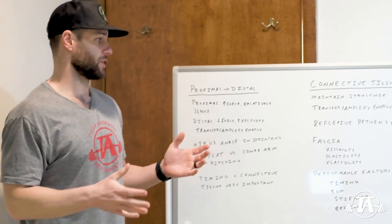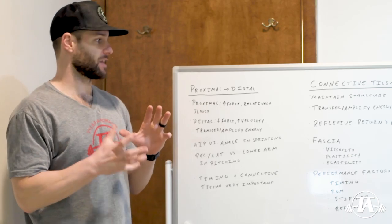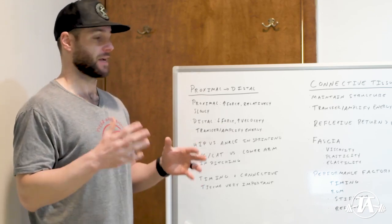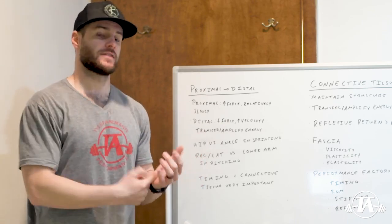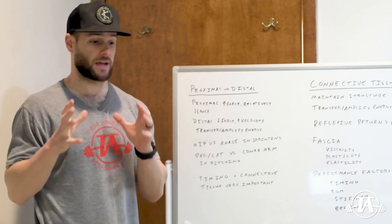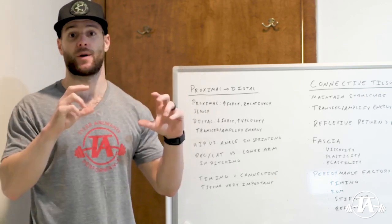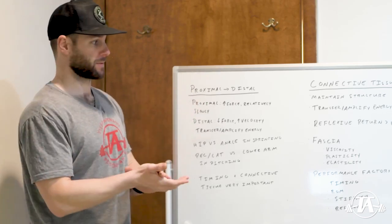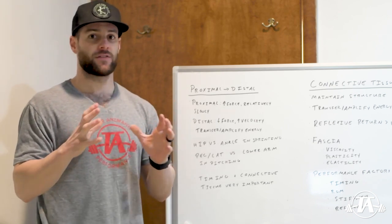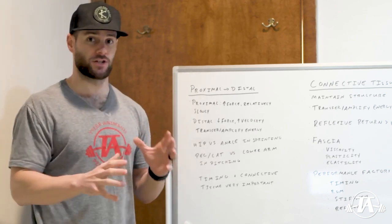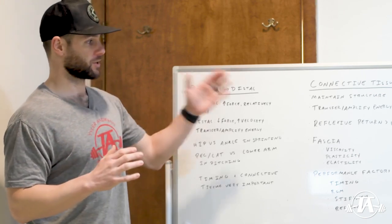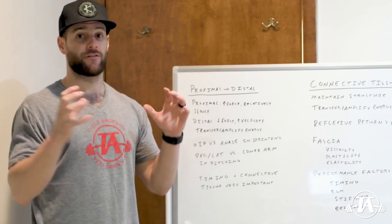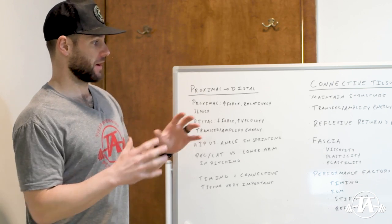Let's define connective tissue. Broadly speaking, it's meant to maintain the structure and integrity of different portions of the body. In this category we find tendons, ligaments, and fascia — tendons and ligaments can be further categorized under the fascia umbrella. For a long time it was viewed as just structural tissue, but now we understand it's really important for transferring and amplifying energy, as well as proprioception. There are a lot of proprioceptors in fascia, so it's really important in that realm as well.